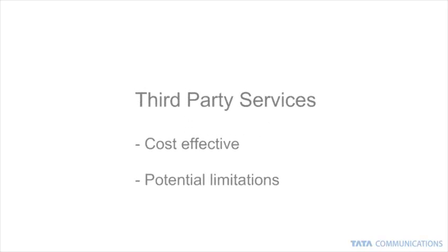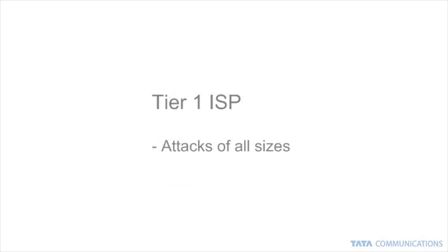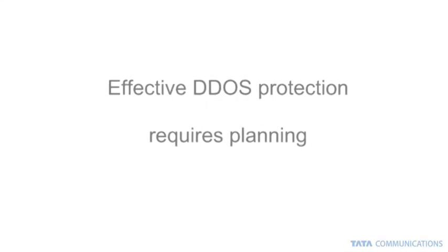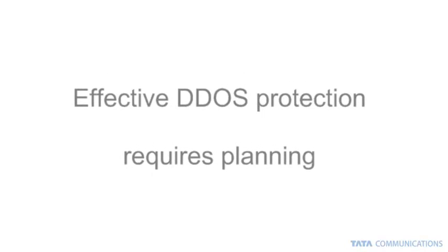In summary, there are three ways to deal with DDoS attacks and they all have merit. Third-party services are often perceived as the most cost-effective but are limited to protecting against a subset of attacks. Appliance-based approaches are highly effective against application-layer attacks but are limited to the capacity of the appliance. The Tier 1 ISP approach is geared to handle high-volume attacks and can protect customers even in the face of the largest attacks. For every network, the right approach or combination of solutions can only be determined by those running the network.